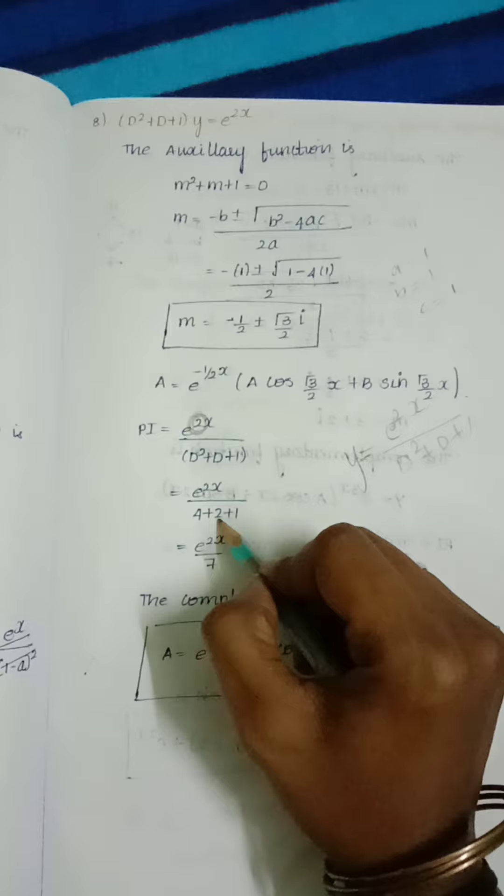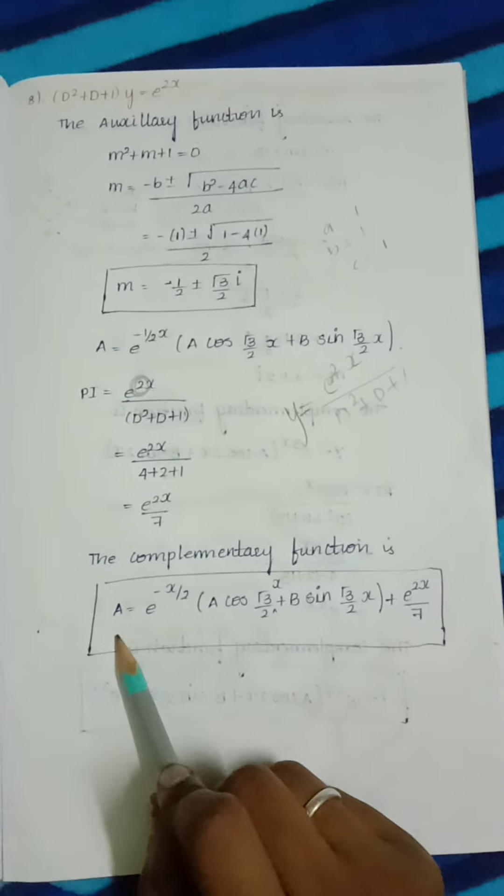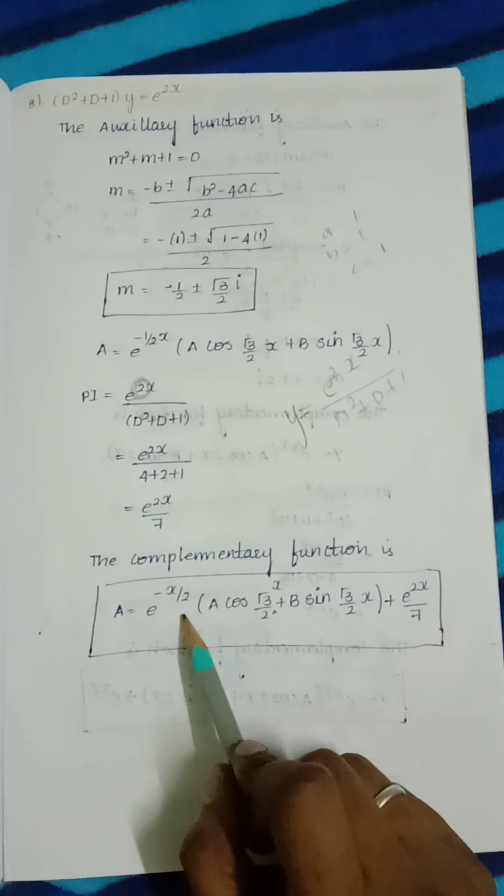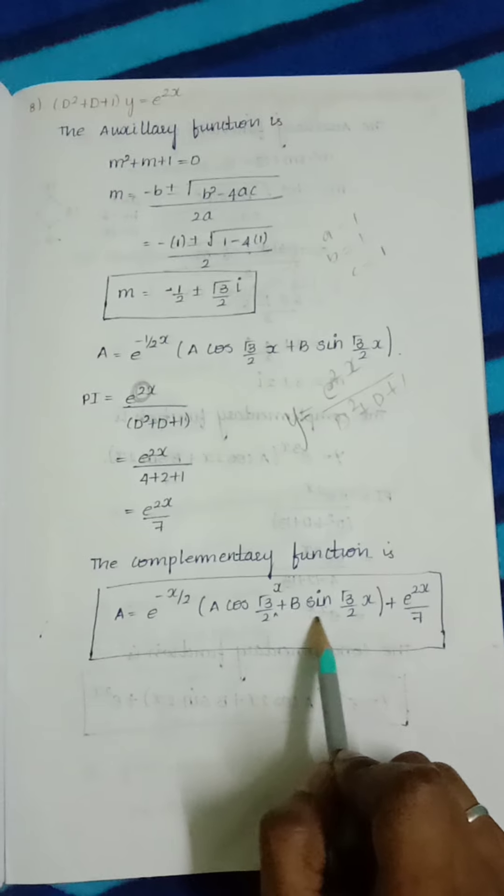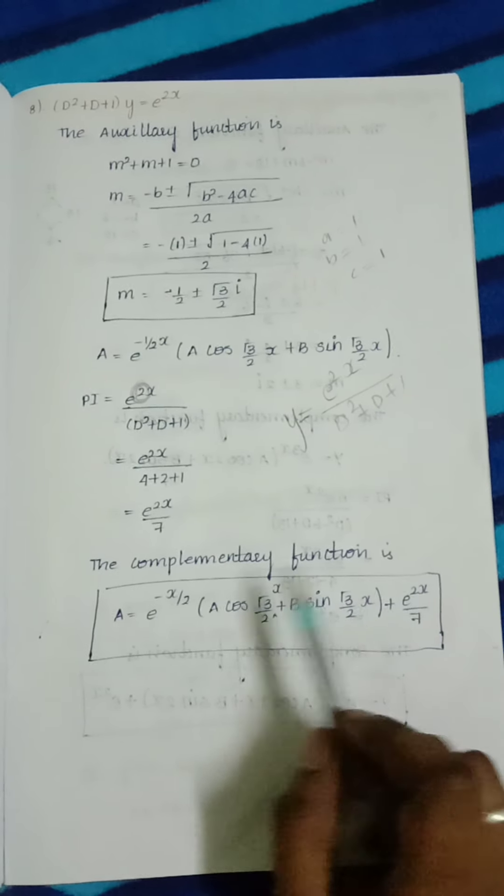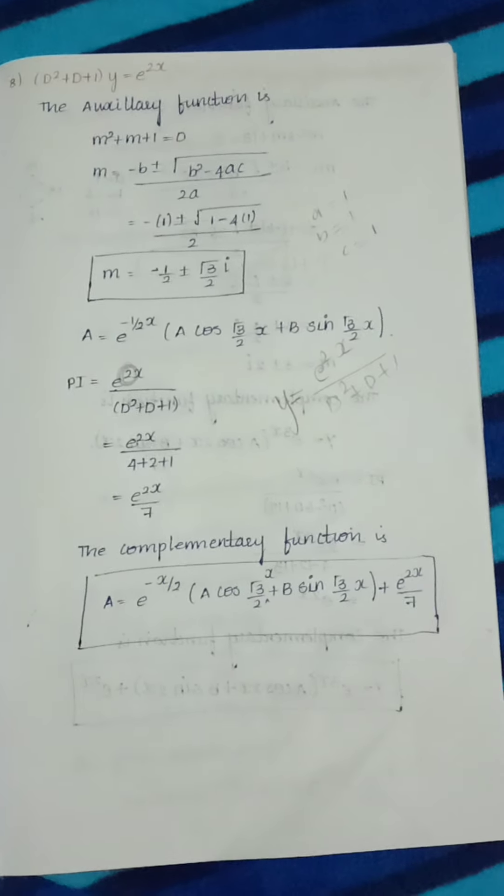The complete solution is: y equals e^(-x/2) (a cos(√3/2 x) + b sin(√3/2 x)) plus e^(2x)/7. This is the solution for this question.